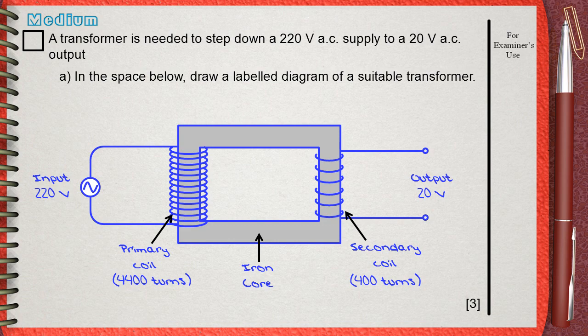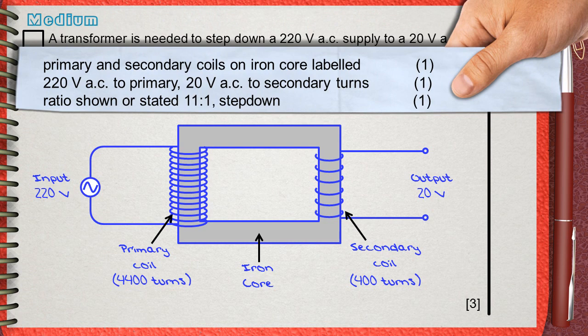The mark scheme awards three marks for this question. Drawing primary and secondary coil on the iron core with the labels, this is only one mark. Showing that the input is 220V AC to the primary coil and 20V AC to the secondary coil. This is one mark.